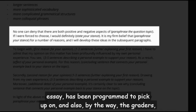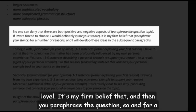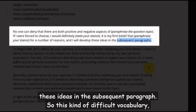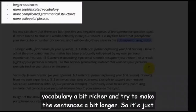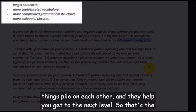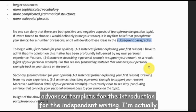The human graders will also see that you're writing at a pretty advanced level. After 'It is my firm belief that...' you paraphrase the question, then add 'for a number of reasons' with another comma, and finish with 'I'll develop these ideas in the subsequent paragraph.' Instead of saying 'following paragraph,' you use 'subsequent' — richer vocabulary with longer sentences. You want to stack these little things up, and they pile on each other to help you get to the next level. That's the advanced template for the introduction of the independent writing.